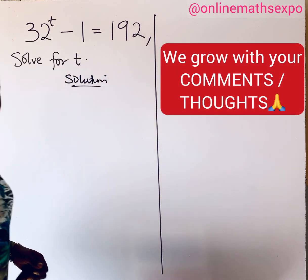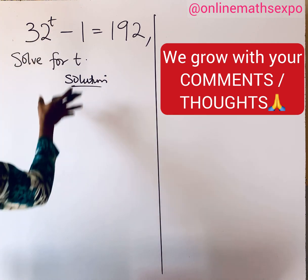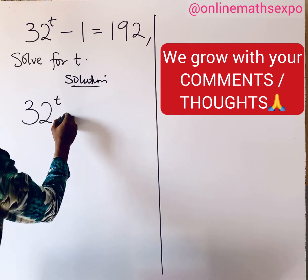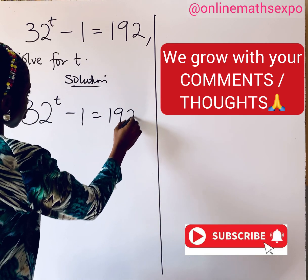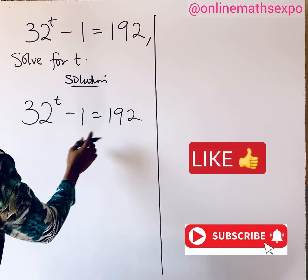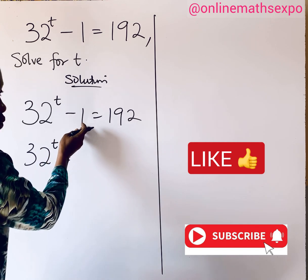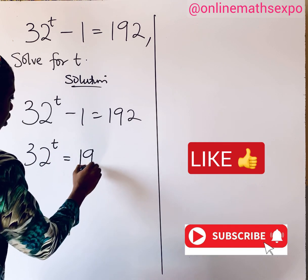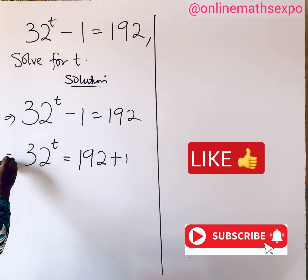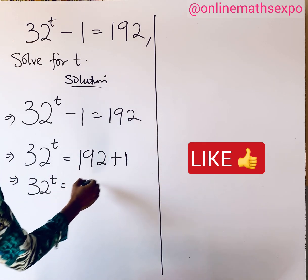This is just a simple exponential equation because of the power. What we do is collect like terms. We have 32 raised to the power of t minus 1 equals 192. Since the minus 1 is negative, we collect like terms: 32 raised to the power of t equals — we add 1 to both sides — 192 plus 1.